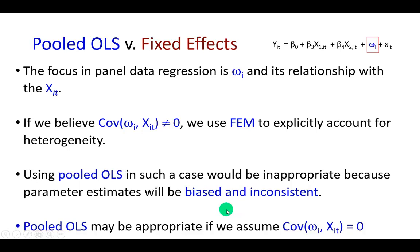So how do we determine which panel data model is then appropriate? First off, it's important to remember that the focus is on omega and how it relates to the independent variables. If we believe that the covariance between the two is non-zero, then we use fixed effects model in order to explicitly account for heterogeneity.